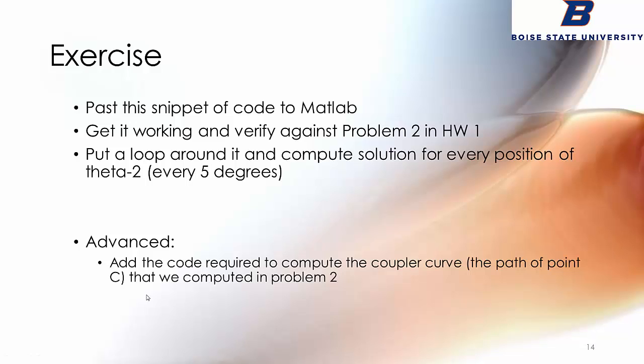What I want you to do is paste that code into MATLAB and get it working and verify it against problem 2.1 in the homework. Put the angle you had in there and see if it gets you the same answer. Then put a loop around it and have it compute the solution for all values of theta 2, for every five degrees around the circle. Use MATLAB to plot the results and look at theta 3 and theta 4 and how they change. If you really want to own this code and be good at MATLAB, add the code to find the coordinates of the coupler point C and use that to plot the coupler path. This is about where we'll pick this up on Friday in class. Hopefully that makes a lot of sense and you got a lot out of it.